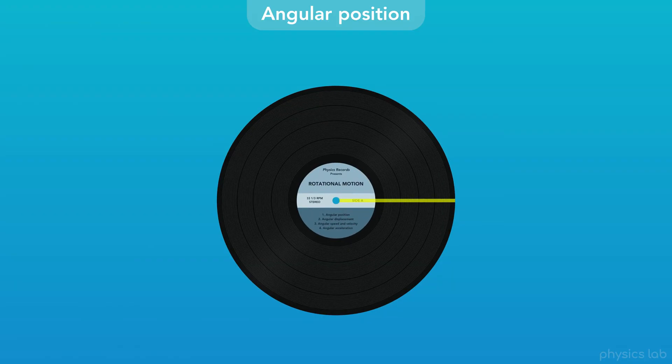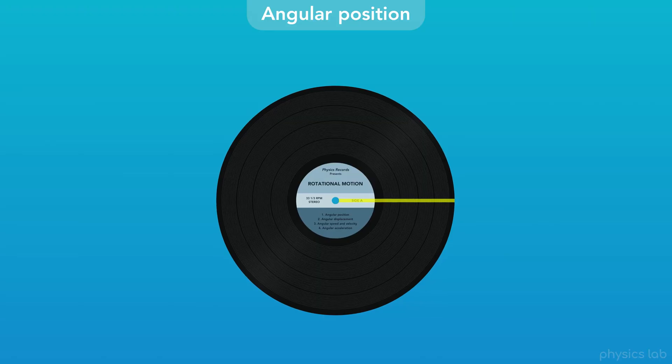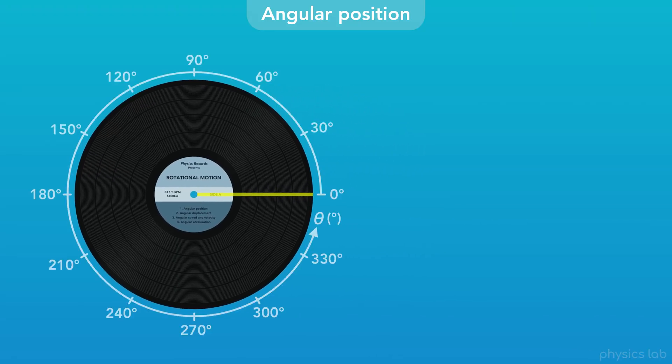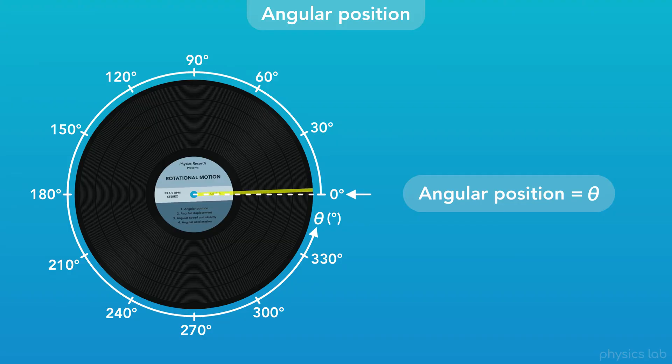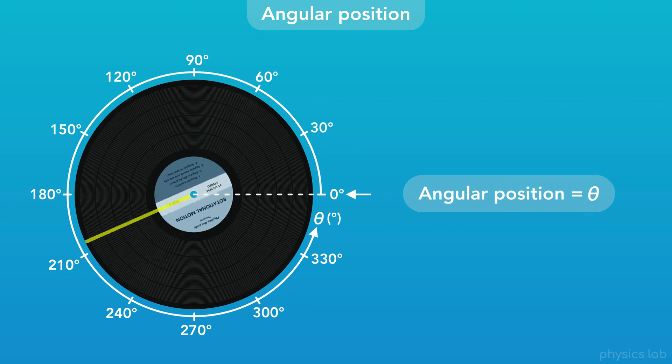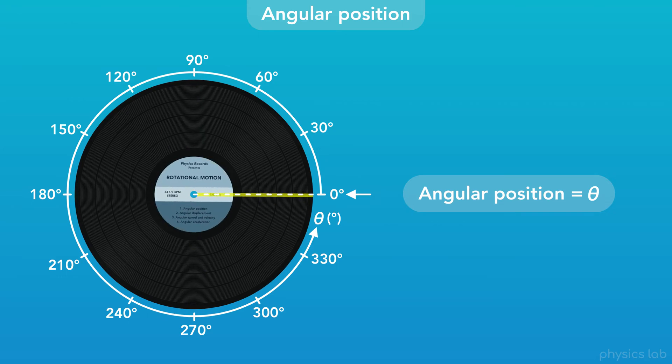So how can we track the angular position of this line? Like with other types of motion, we're going to use an axis. We represent angular position using the Greek letter theta, which is commonly used for angles. For now, we're going to use the unit of degrees. As usual, we establish a zero point for our axis, and we measure the angular position of the line on the record relative to that zero point.